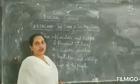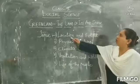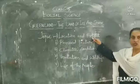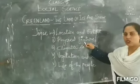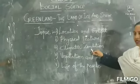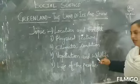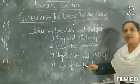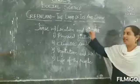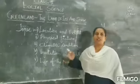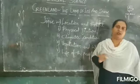Today we are going to see the following topics: location and extent, physical feature, climatic condition, vegetation and wildlife, and life of the people in Greenland. These are the topics which we are going to discuss in this chapter.